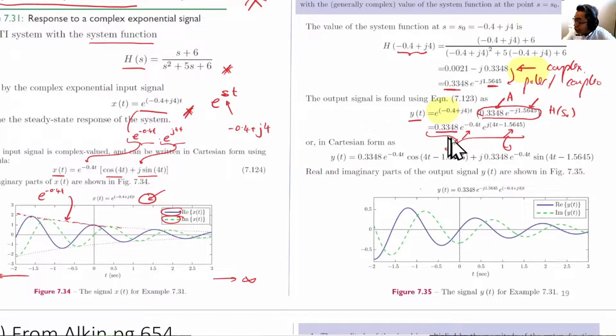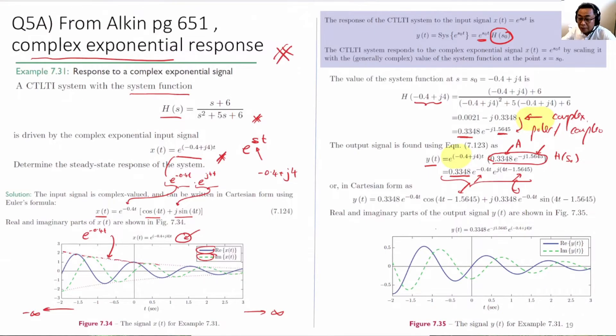Look at the blue one. Because the gain is 0.3348, it has multiplied by the original signal and scaled it down to 0.3348. Additionally, it has introduced a phase shift of minus 1.564. Thank you.